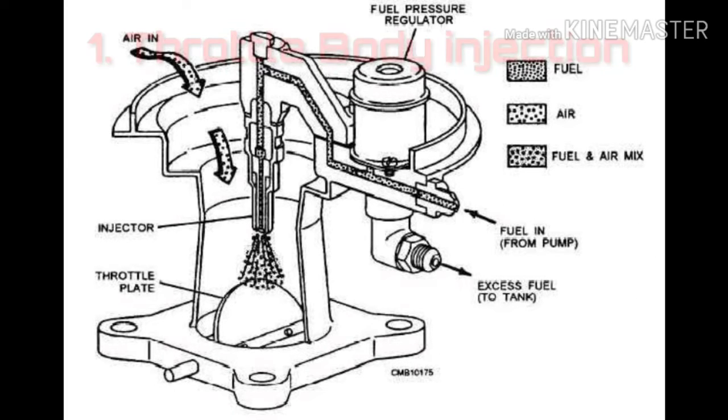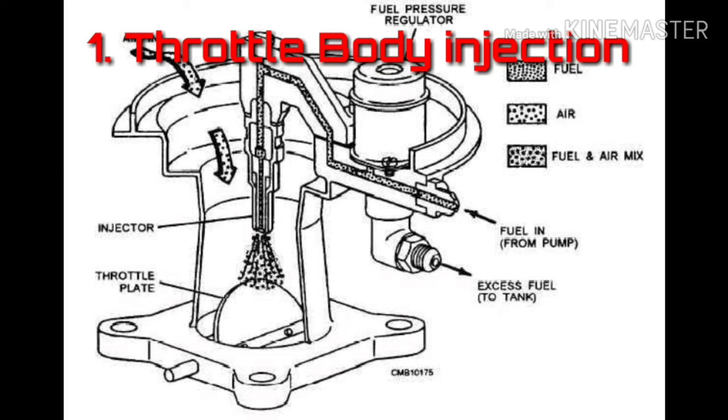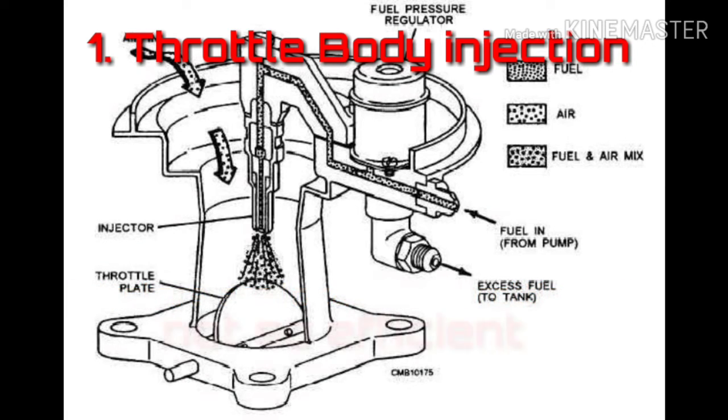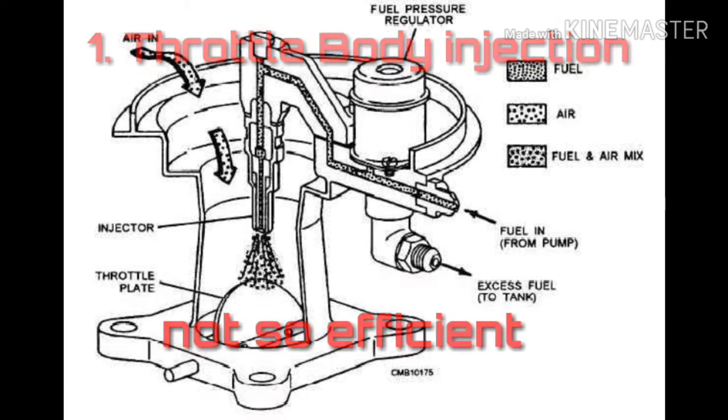First one is throttle body injection system, which is nearly same to a carburetor in which one or more injectors are located in a throttle body which supplies fuel to the engine by intake manifold. It is not an efficient technique.